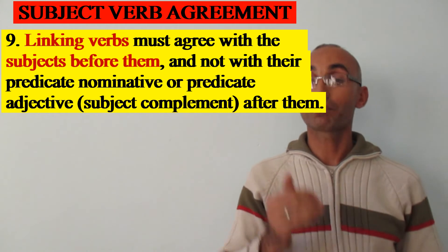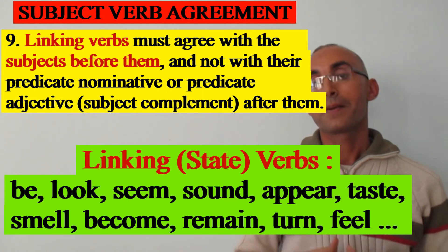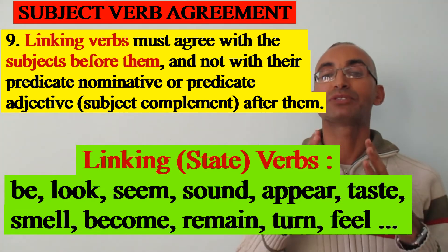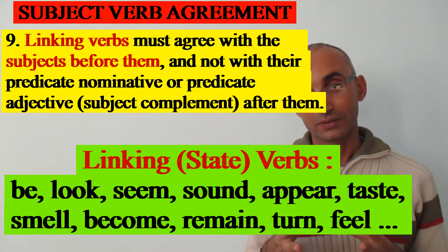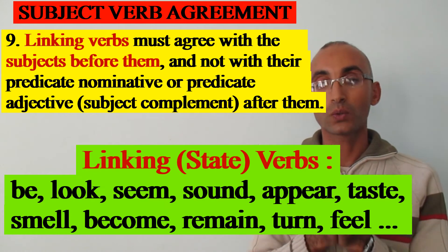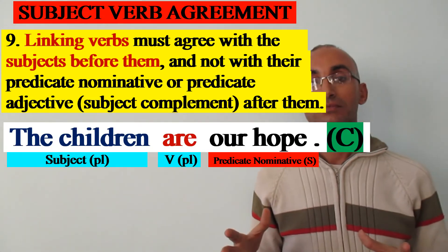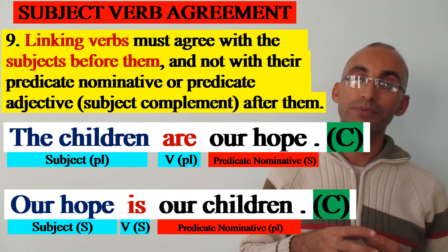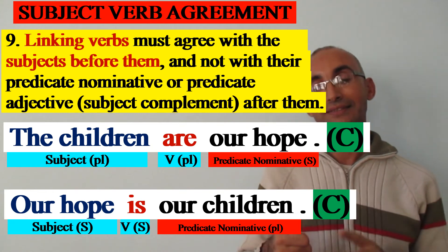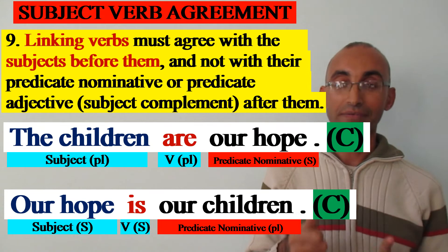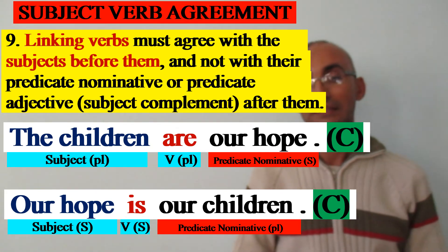Another important rule: linking verbs must agree with their subjects and not with the predicate nominative, predicate adjective, or what we call the subject complement. The verb follows its subject before it. For example: 'The children are our hope' — 'are' follows the plural subject 'children.' And 'Our hope is the children' — 'is' is singular following the singular subject 'hope.' The verb does not agree with what comes after it.